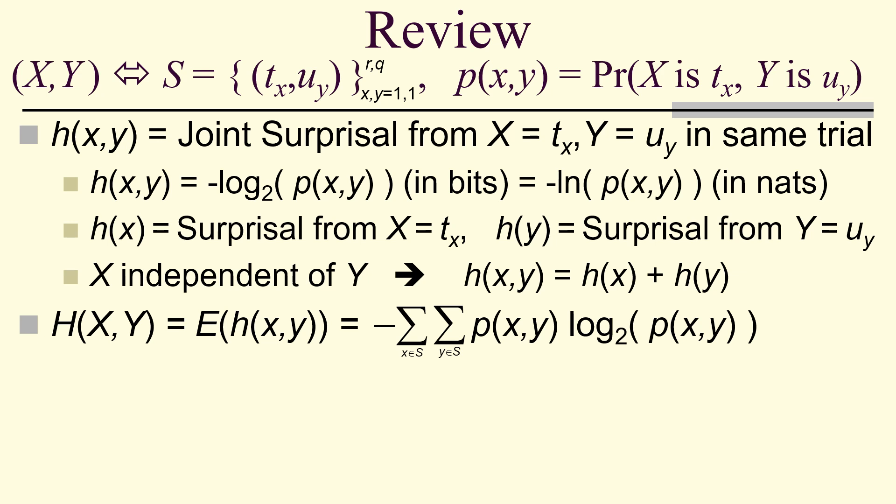If x is independent of y, then the joint self-information equals the sum of the individual self-informations. The entropy for a joint distribution is the expected value of the joint surprisal — a double sum over x and y of the joint distribution times the base-2 logarithm of p of x, y, negated, and only over those distribution values which are greater than 0. Probability equal to 0 doesn't contribute to entropy.